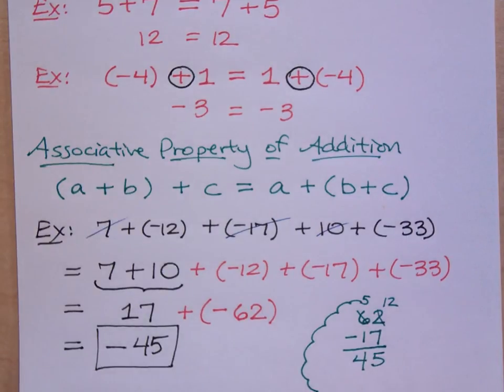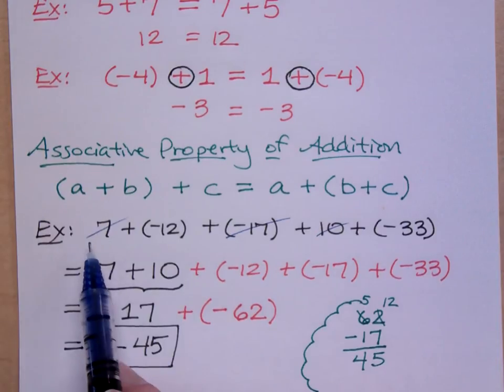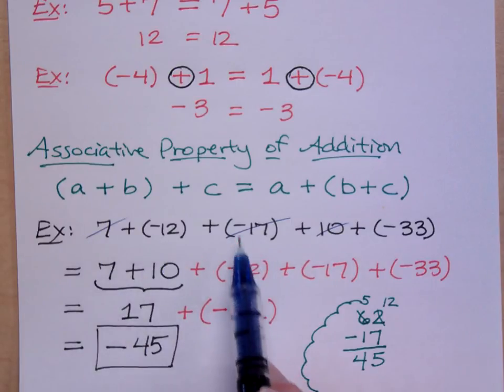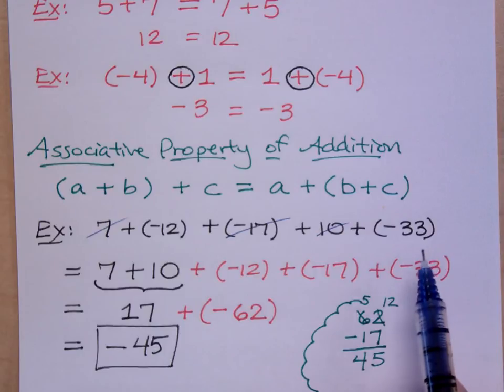Reorder, regroup to make it easy on you. If you don't want to do that, you may still go straight across. 7 plus negative 12 is negative 5, and then negative 22, and then negative 12, and so on. You can do that. But you can also rearrange. By rearranging, you can make your life a little bit easier.